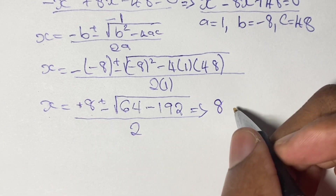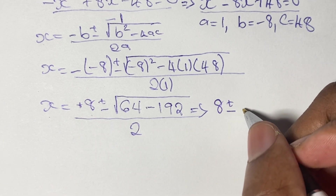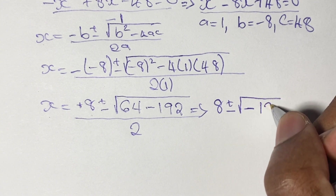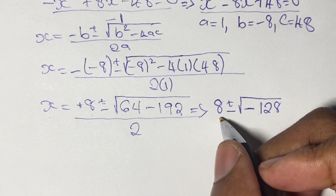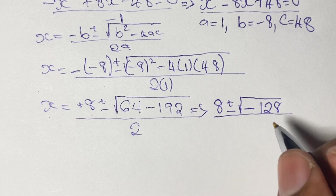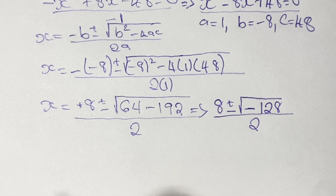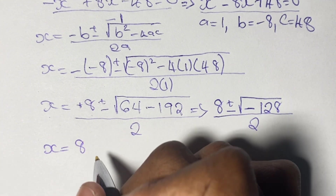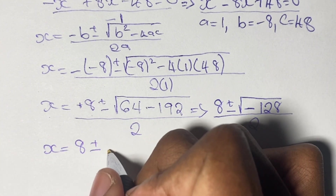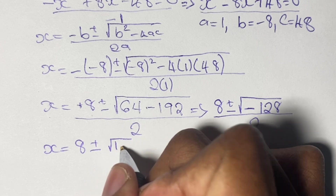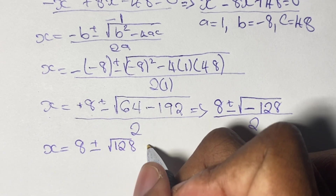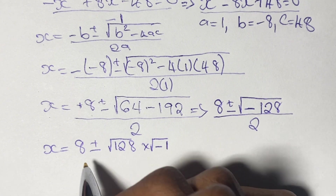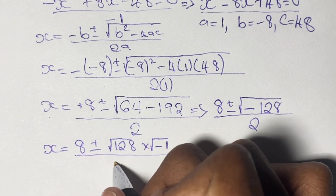This means that x is equal to 8 plus or minus the square root of negative 128, all over 2. As noted before, our solutions for x and y are going to be complex. We have the square root of a negative number, which gives us a complex situation. We treat this by writing the square root of 128 times the square root of negative 1.